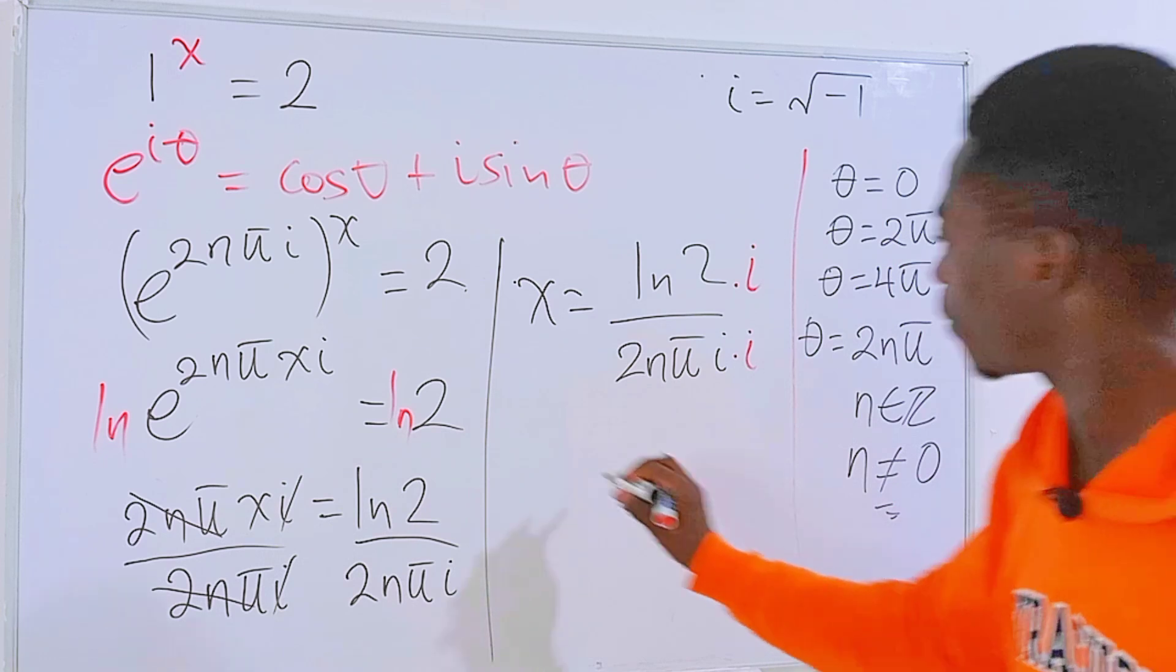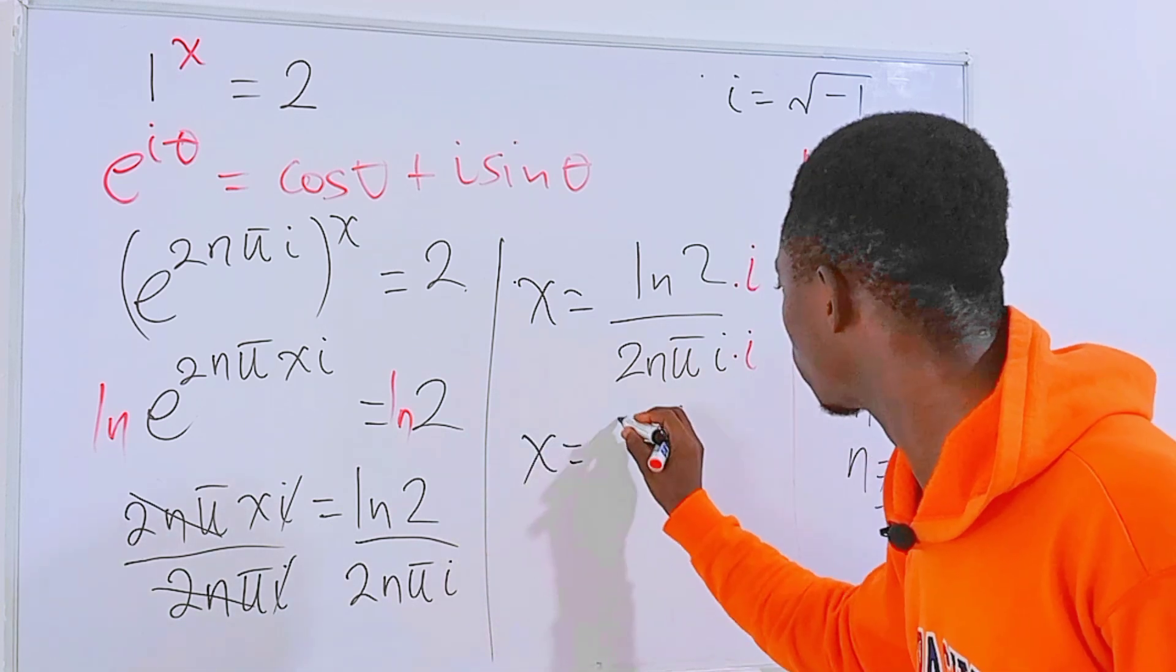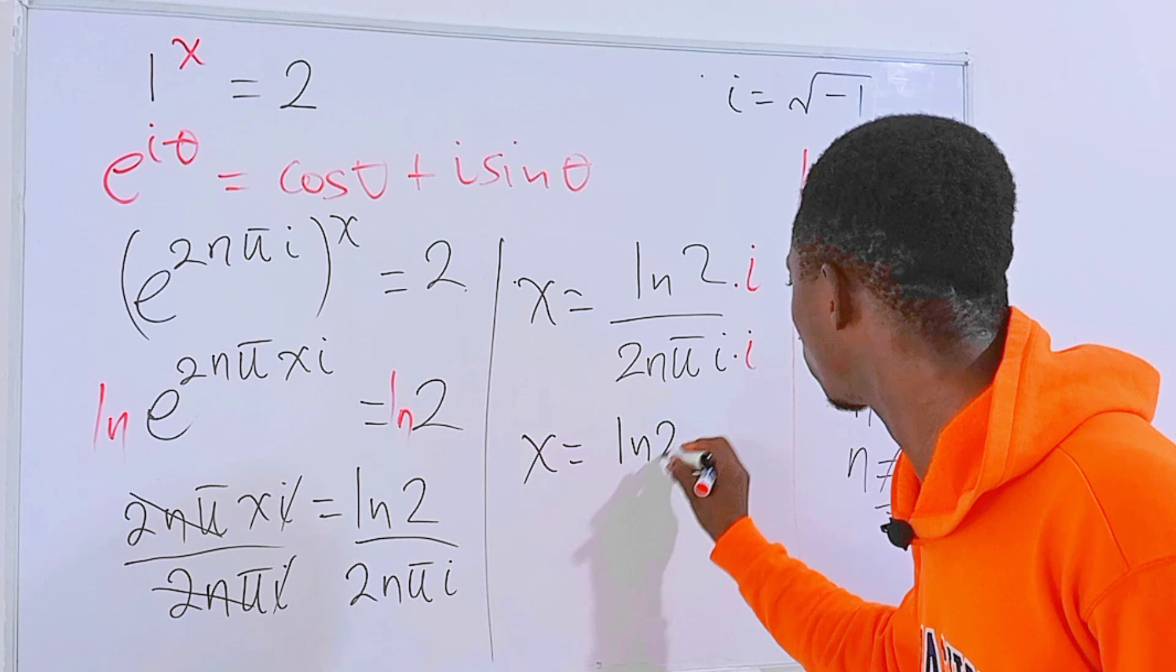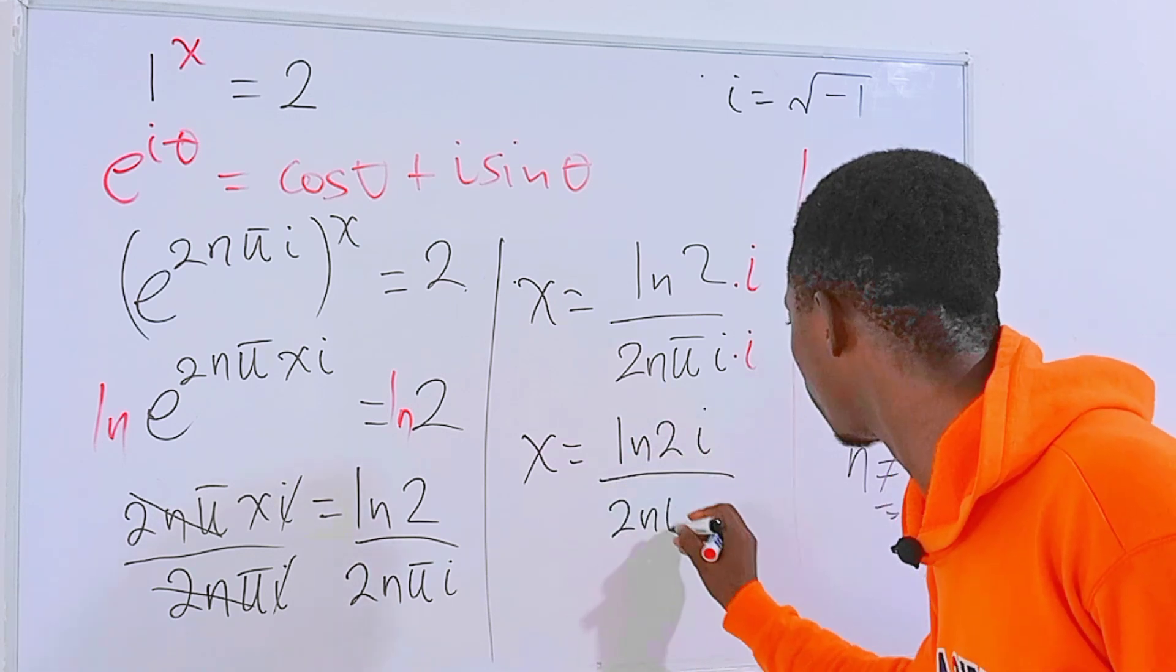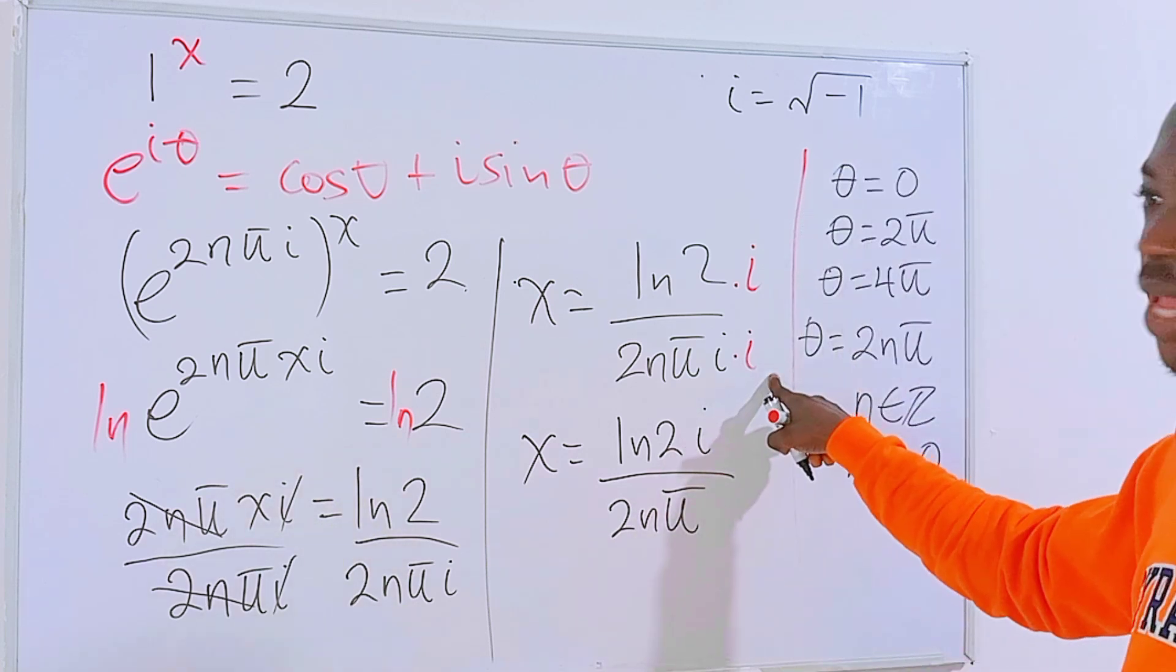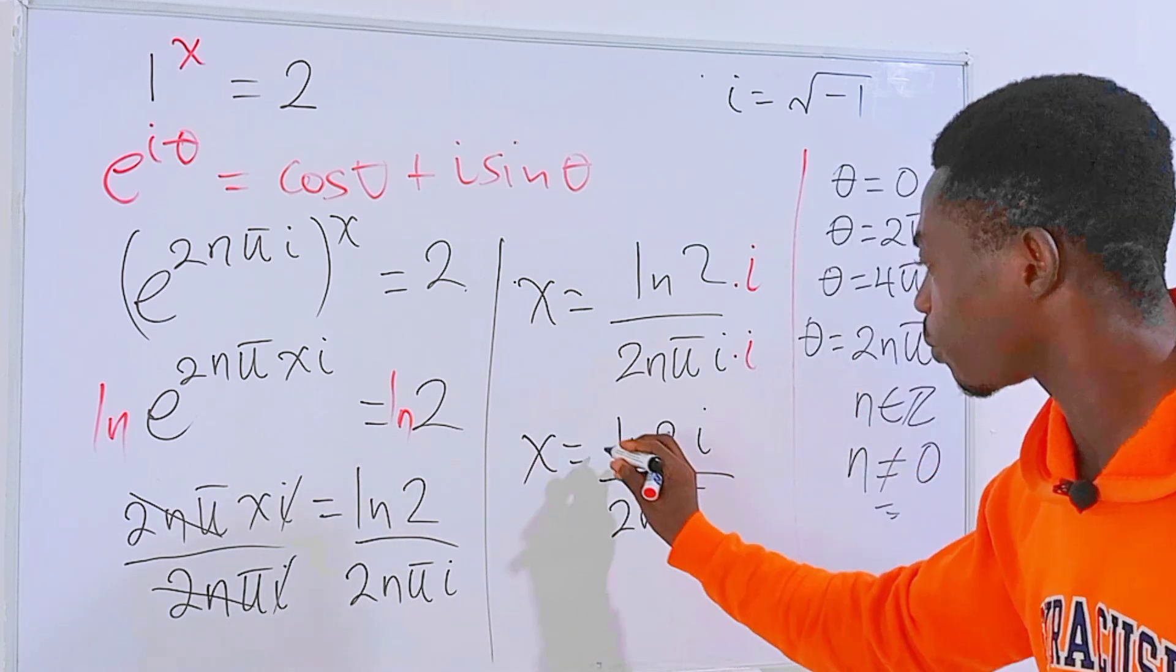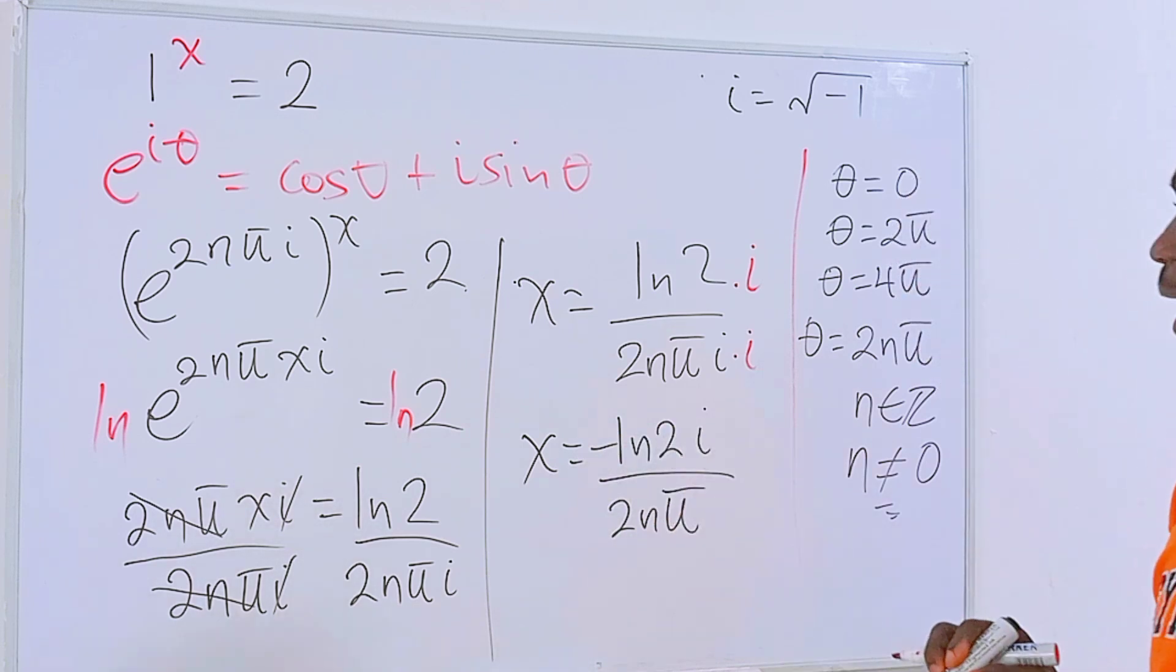So that we will get x equals ln of 2i divided by 2nπ. i times i is negative 1, so we have negative 1 here, but we can bring it to the top right here.